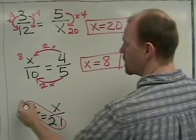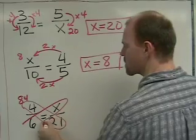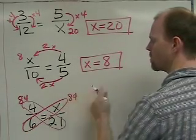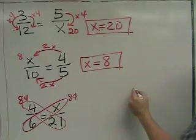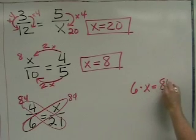4 times 21 is 84. And that means 6 times this missing value has to also equal 84. So we come over here on scratch paper. So this says 6 times something is equal to 84.